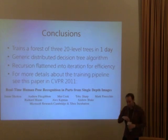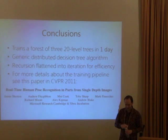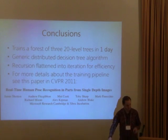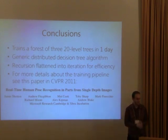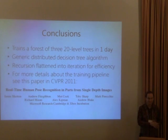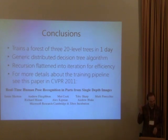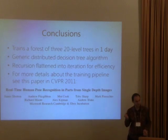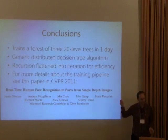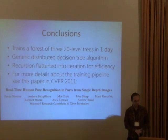Question about accuracy: The exact numbers are in the CVPR paper, but accuracy certainly improved with more images. Using multiple trees — three was the sweet spot to avoid overfitting, though you still saw improvement up to five — also helped, though with diminishing returns.